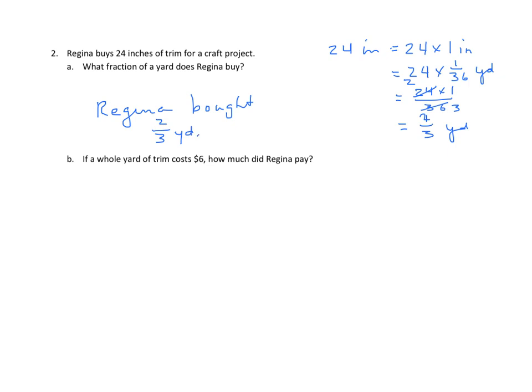Now, we need to find out how much it costs to buy that when it costs $6 a yard. So, we have two-thirds of a yard. One yard is $6. So, two-thirds of a yard would be two-thirds of $6, which is the same as two-thirds times six.